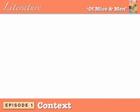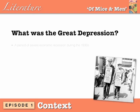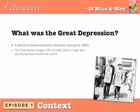So what was the Great Depression itself? The Great Depression was a long period of severe economic recession during the 1930s. It began with the Wall Street Crash and quickly spread around the world due to the influential nature of the US economy. The US only recovered in 1941 when industry was needed to build ships, make weapons and ammunition, and other essentials required to ready the country for World War II.